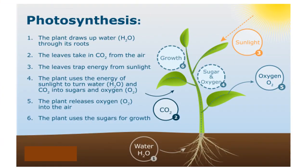Here, diagrammatically, we have represented the process of making food by green plants, that is photosynthesis. You can see clearly from the diagram, the plant draws up water through their roots, which is denoted by point number 1. Secondly, the leaves take in carbon dioxide from air, labeled as point number 2.